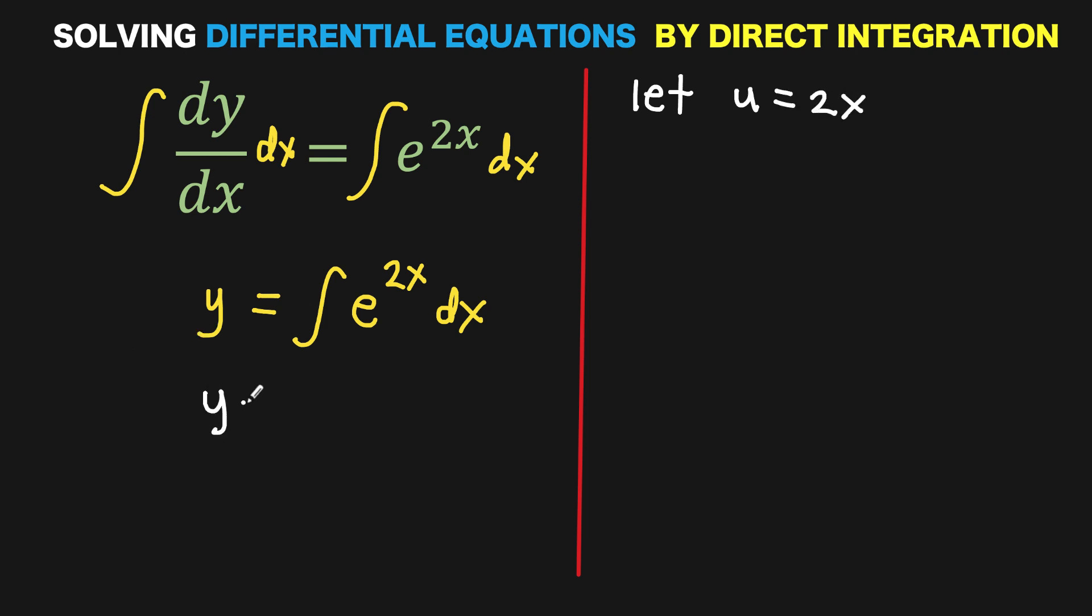Therefore, this becomes y equals the anti-derivative of e raised to u. We still have the dx. What we want is to have the form e to the u du. Therefore, we still need to rewrite this dx in terms of the differential du.